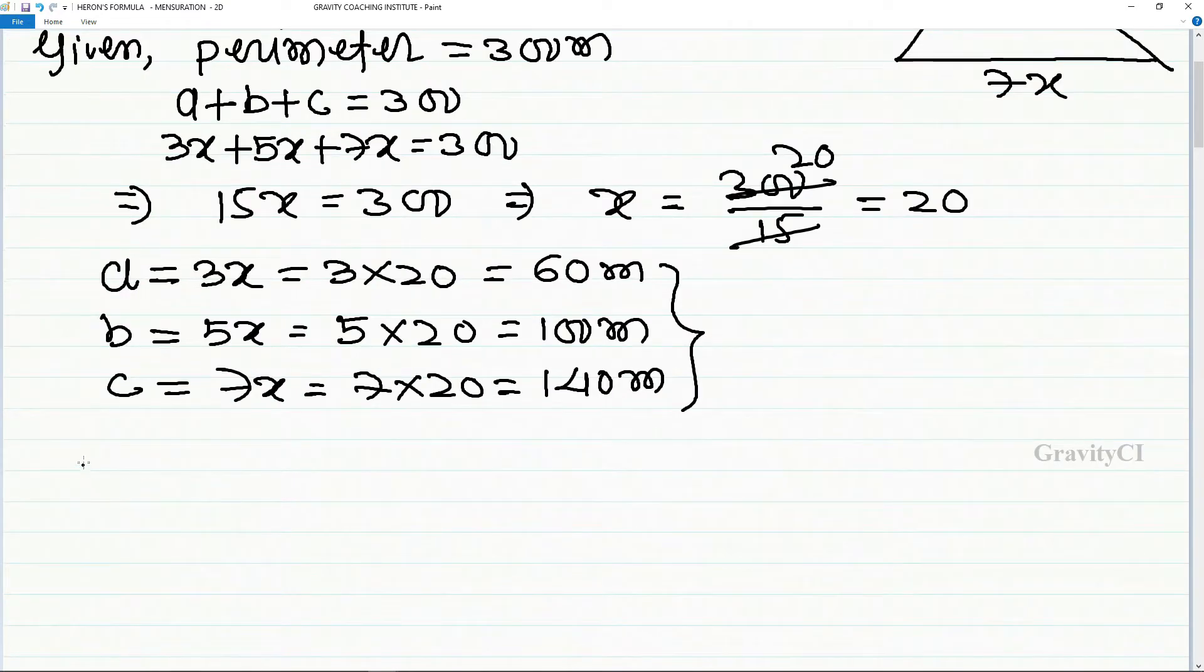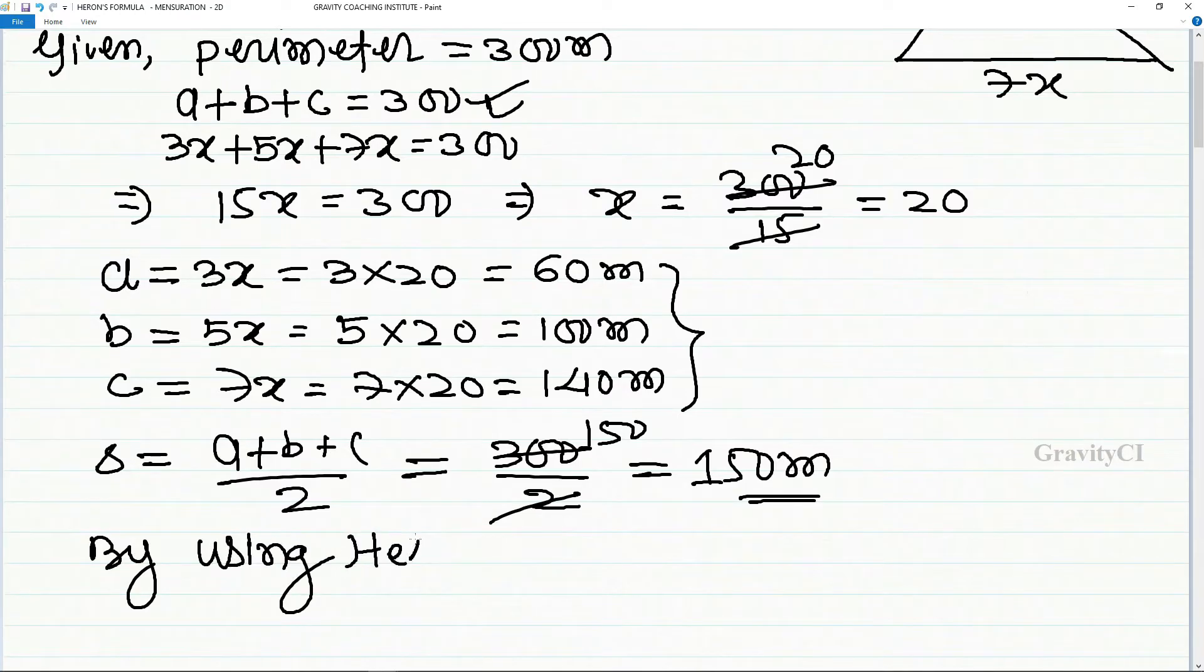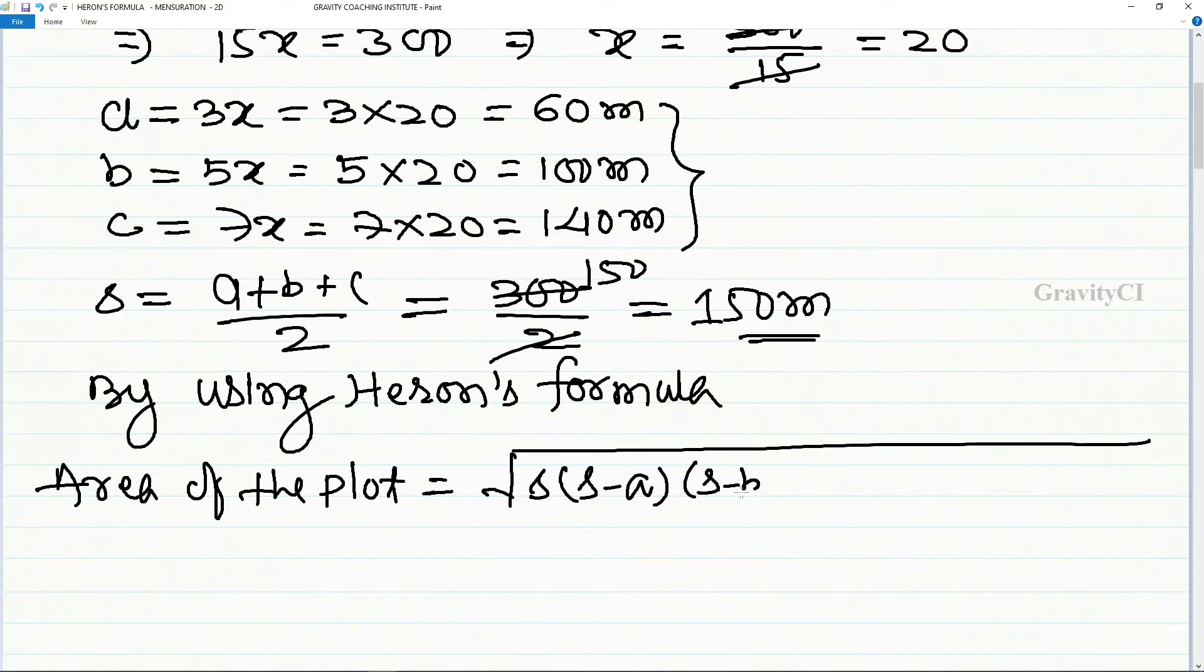First we have to find the semi-perimeter, which is 150 meters. By using Heron's formula, area of the triangular plot equals the square root of s times s minus a times s minus b times s minus c.